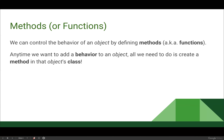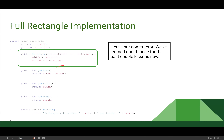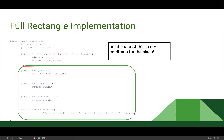Looking back at our full rectangle implementation — the full thing I showed you a while ago — we have our instance variables, we have our constructor that we've been learning with for the past couple of classes, and then down here all the rest of this are the methods for our class. These are all of the functions built into our rectangle class that we will be able to use when we create a rectangle object.